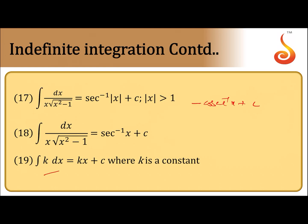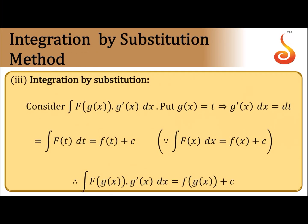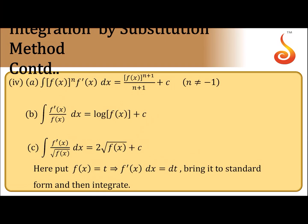The integral of a constant is kx plus constant. The rule of integration: a constant multiplied by f(x) — you can take the constant out. The integral of the sum of functions is the sum of the integrals. Integration by substitution: if you have ∫f(g(x))·g′(x) dx, substitute g(x) = t so that g′(x) dx = dt. The answer equals f(g(x)) plus constant.